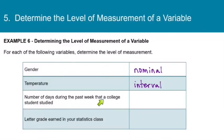Number of days during the past week that a college student studied. Well, zero means zero. Zero means he didn't study at all or she didn't study at all. So this is definitely ratio data. And then letter grade earned in your statistics class. Well, the letter grades certainly can be put in order. A grade of A is better than a grade of B, which is better than a C, and so on. But we can't subtract them because they're not numeric. So I'm going to say that's ordinal.